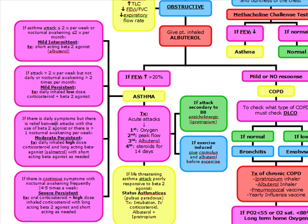Moderate persistent involves daily symptoms with relief between attacks using beta-2 agonists, or more than one nocturnal awakening per week. Treatment is daily inhaled high-dose corticosteroids and a long-acting beta agonist such as salmeterol, with short-acting beta agonists as needed. Severe persistent is characterized by continuous symptoms with nocturnal awakening four to five times per week. Treatment is oral corticosteroid plus high-dose inhaled corticosteroid, long-acting beta-2 agonist such as salmeterol, and short-acting bronchodilators as needed.